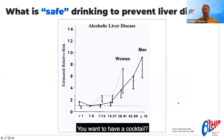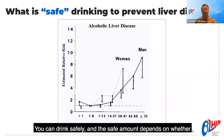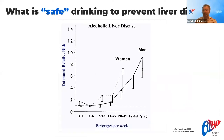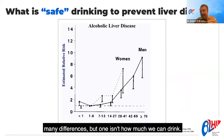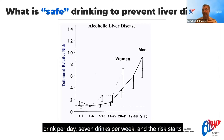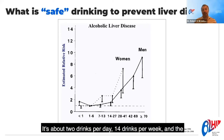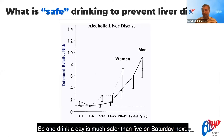How much can I drink and be safe? The safe amount depends on whether you're a man or a woman. For women, it's about one drink per day, seven drinks per week — the risk goes up beyond that. For men, it's slightly more. Importantly, you can't save all those drinks for Saturday night. Binge drinking is very harmful — one drink a day is much safer than five on Saturday.